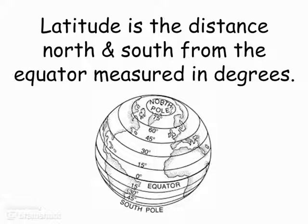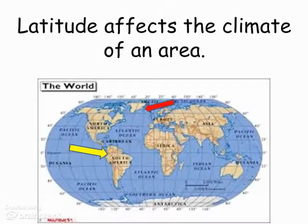One of the things that affects the climate of an area is the area's latitude. Latitude is the distance north and south from the equator, and we measure it in degrees — not degrees of temperature, but degrees in terms of an angle. In this picture, the equator is zero degrees, and as you go up it rises in increments of 15 degrees, then 30 degrees.